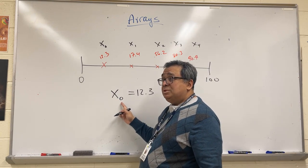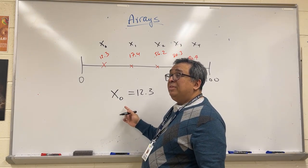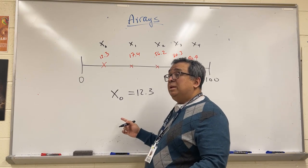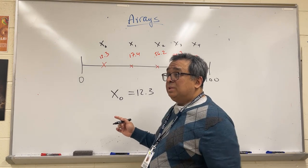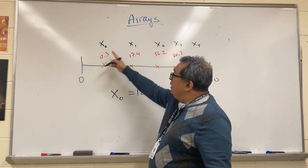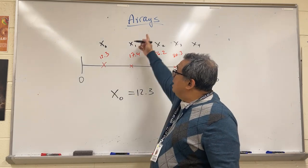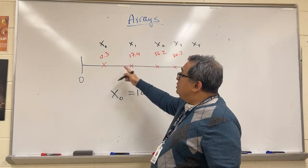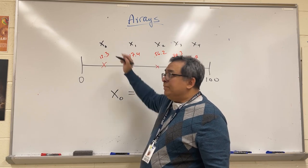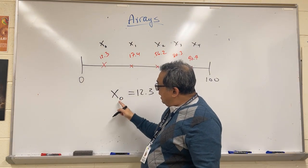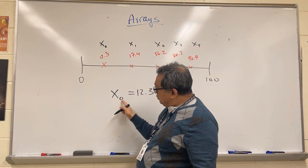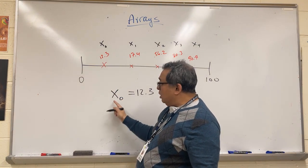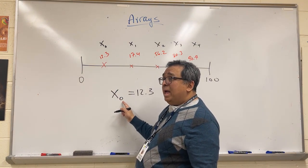Let's look at this example: x sub 0 equals 12.3—that's this point right over here. You notice that I'm using this subscript 0. In math, as is also true in computer science, at least in most languages, our numbering of the list—or in this case we call it an array in Java—is going to start at 0, not at 1.